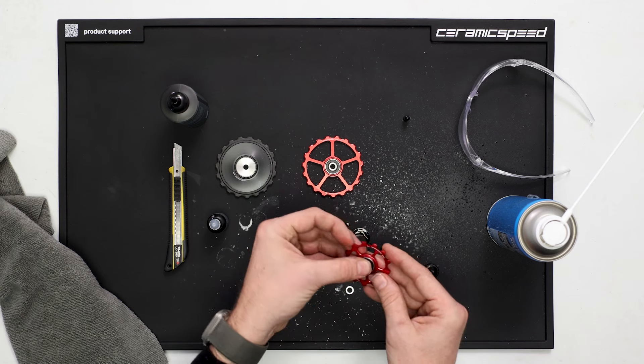Give the bearing a spin. And now, with our safety goggles on, we can go ahead and air out the bearings to ensure they're fully flushed and clean.